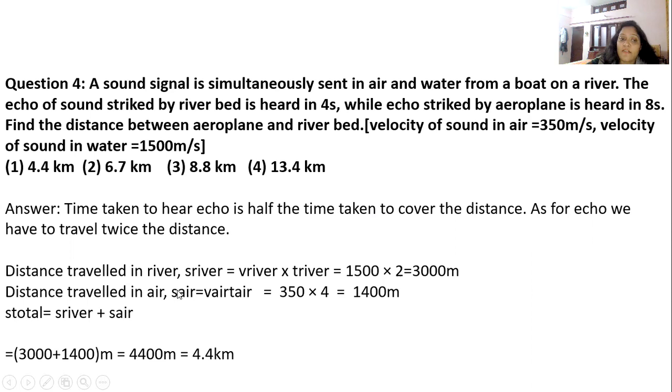Distance in air = velocity × time. 350 × 4. Finally, we will get 1400 meter. If we add both distances we will get the final distance between river bed and aeroplane. 3000 + 1400 meter will be 4400 meter or 4.4 kilometer.